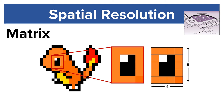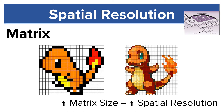Increasing matrix size increases spatial resolution. Charmander on the left has a matrix size of 378 and the one on the right has 1,330. Because Charmander on the right has a higher spatial resolution, we can resolve individual flames in his tail, whereas the one on the left looks like there's only one flame.